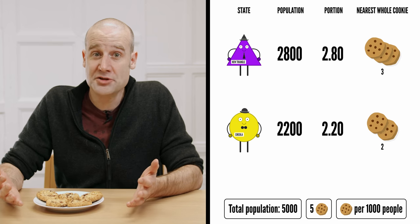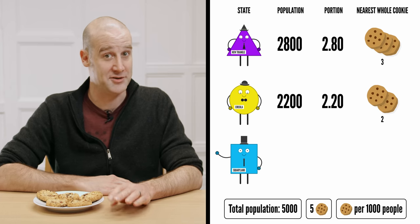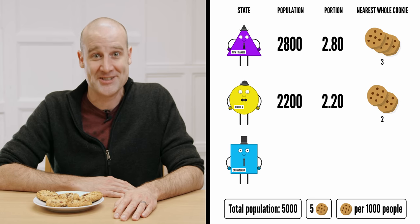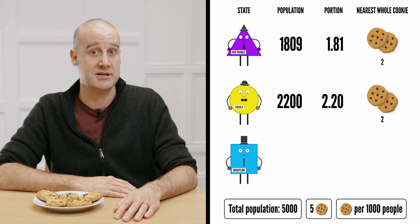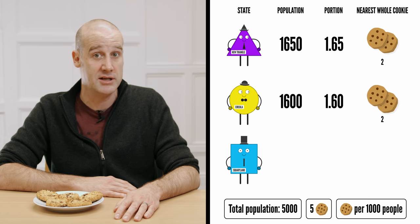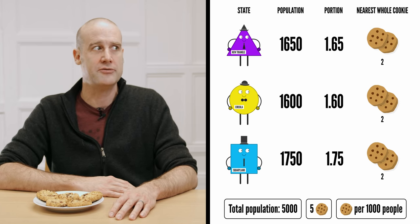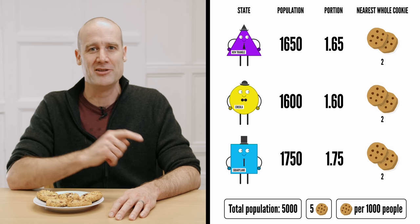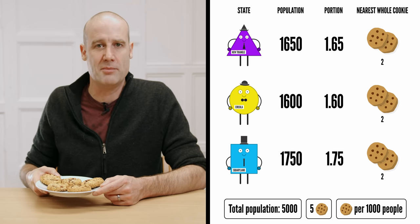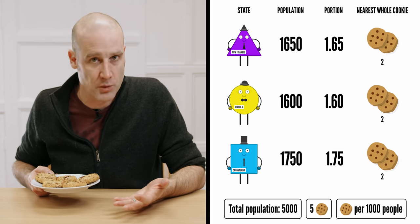But what if a new state joins the union? Now we've got Squarey Land, and we've still got 5,000 people, but they've redistributed between three states: 1,650 in New Triangle, 1,600 in Circular, and the remaining 1,750 in Squarey Land. If we round them all to the nearest whole number, we're going to need six cookies. So rounding's not going to work — someone is going to have to get rounded the wrong way, and they're probably going to be quite upset about that.